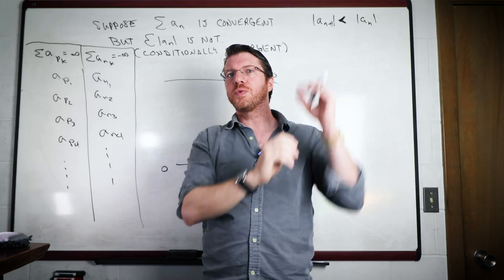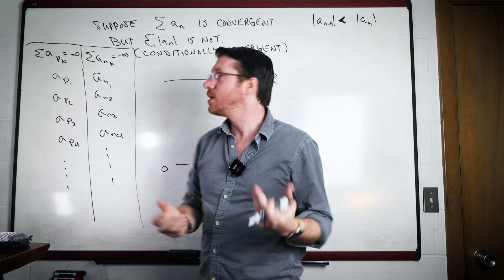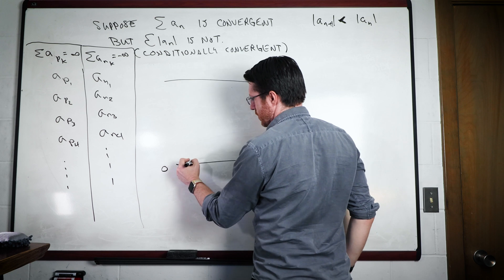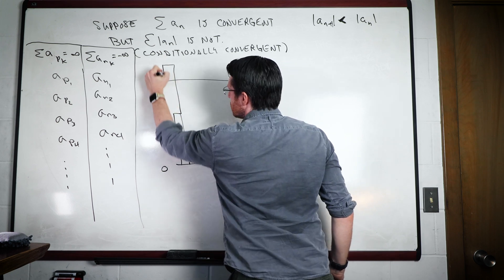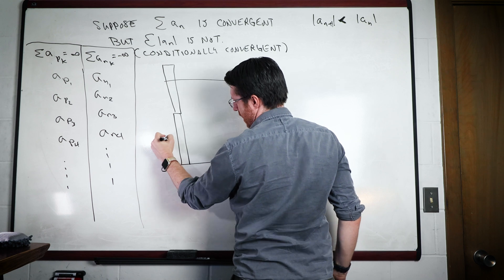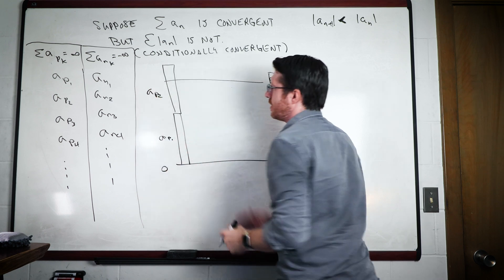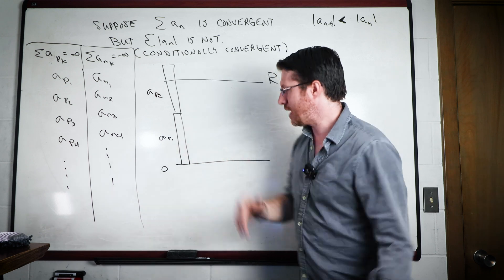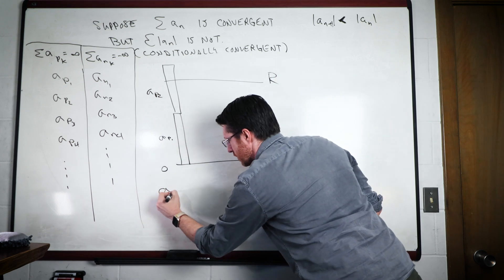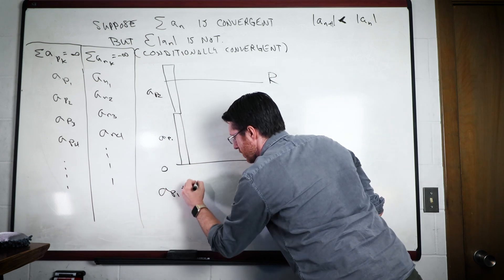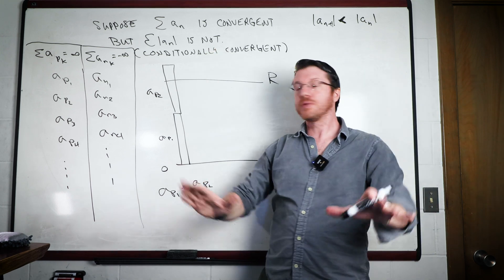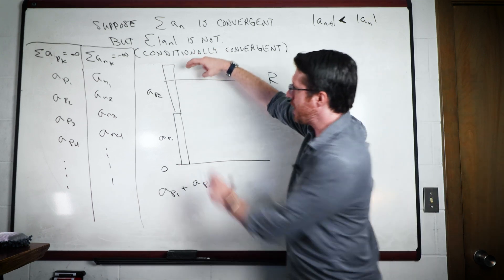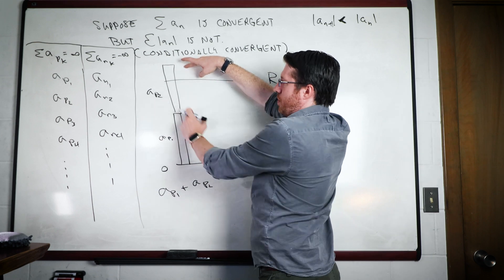So since we know that all these terms are getting smaller, then we know we're getting more and more precise with how much we'll be overshooting. So it might turn out that we only need the first two terms to get above here. So this would be our a_p_1, this would be our a_p_2, and so we're past that. So we've overshot r, and then we stop.